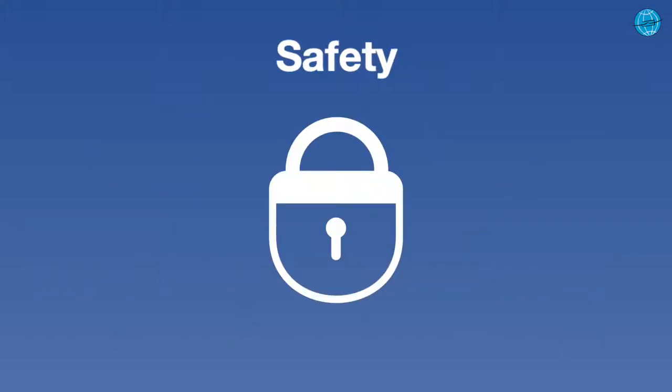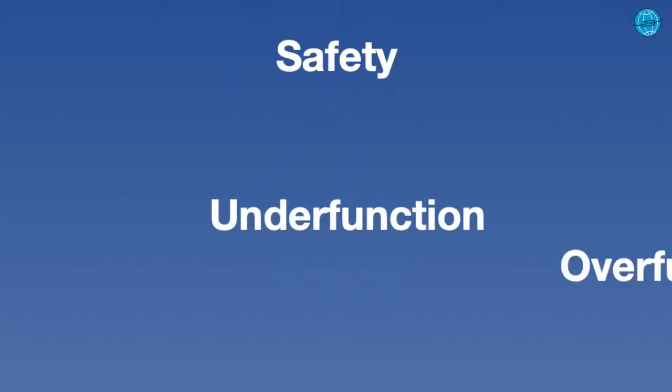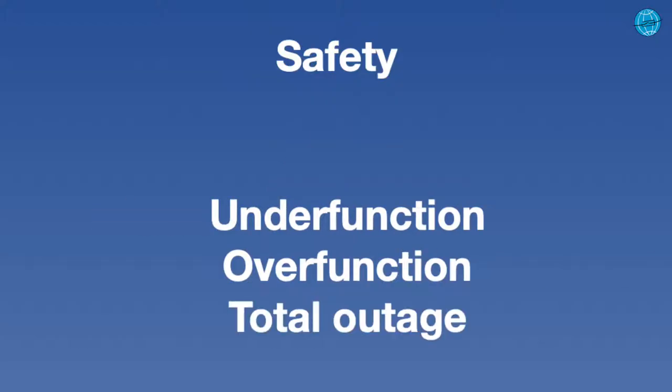Our 3S, the safety of a protection system, describes the ability to perform the required function under special conditions and according to time constraints. In a nutshell, it has to work as expected. If functional deviations occur, we subdivide them in under function, over function and total outage.